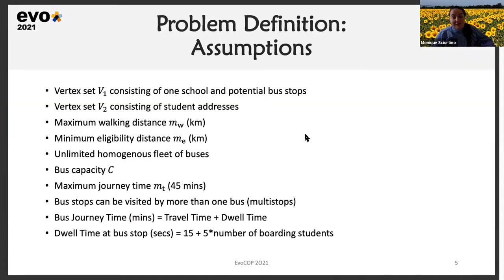We assume a maximum walking distance MW in kilometers that students are expected to walk to a bus stop, which changes depending on the location. There is also a minimum eligibility distance ME — the minimum distance students must live from school to be eligible for school transportation. For example, in Malta, students living more than one kilometer from school are eligible. We assume a homogenous and unlimited fleet of buses with capacity C, and for all instances a maximum journey time MT of 45 minutes.